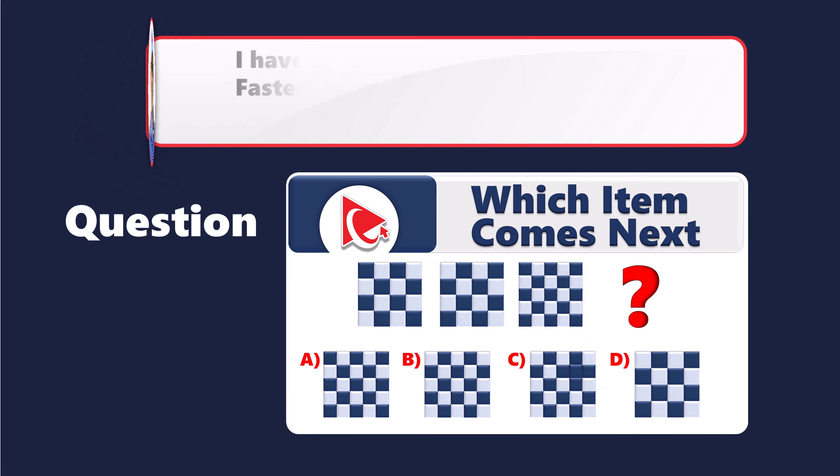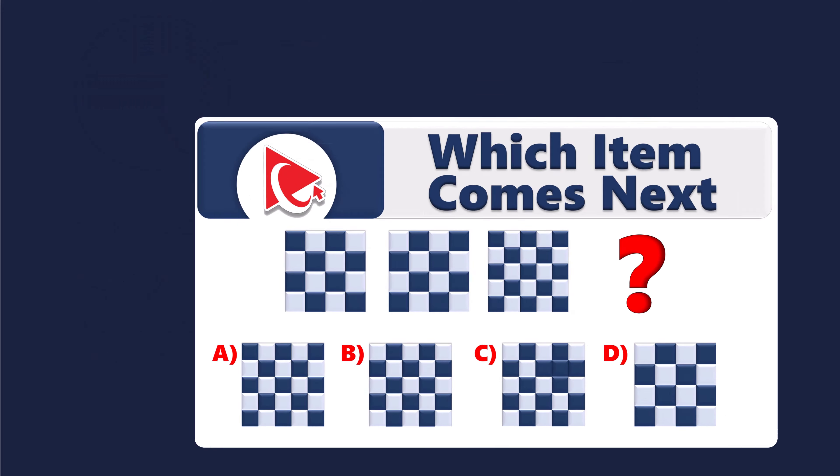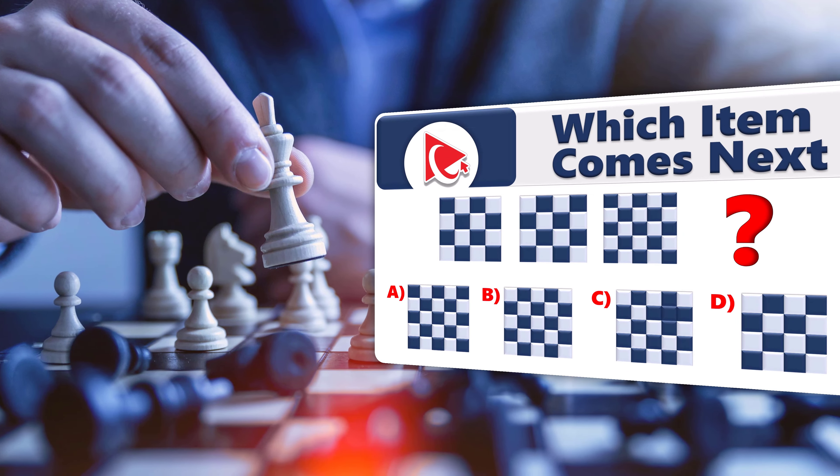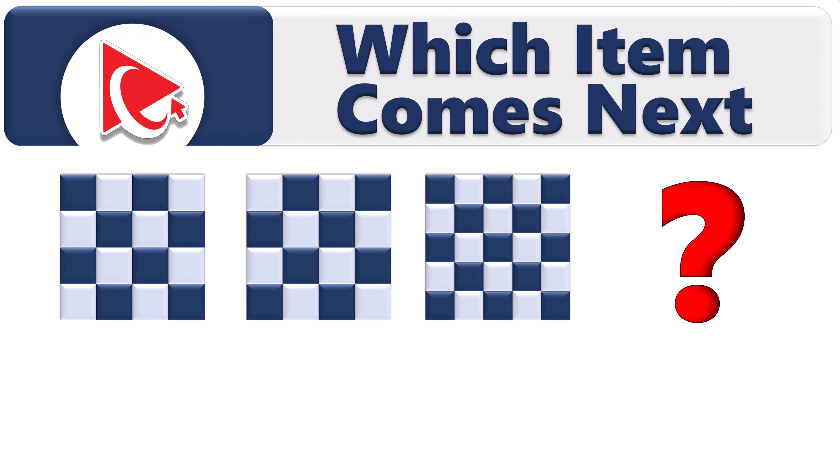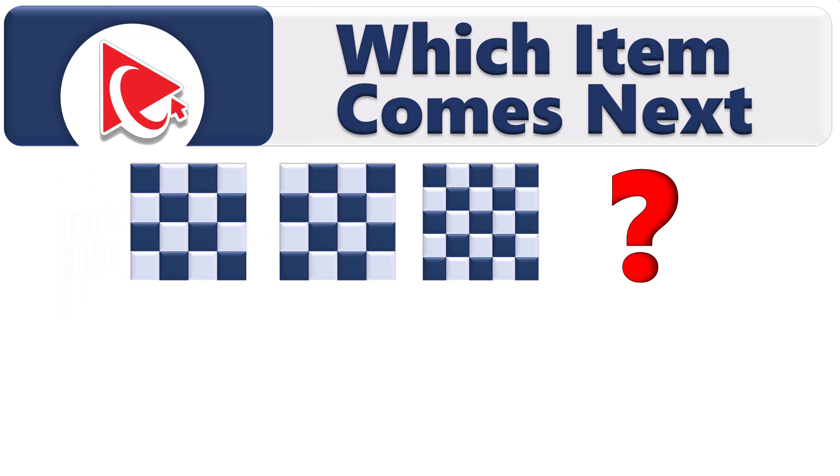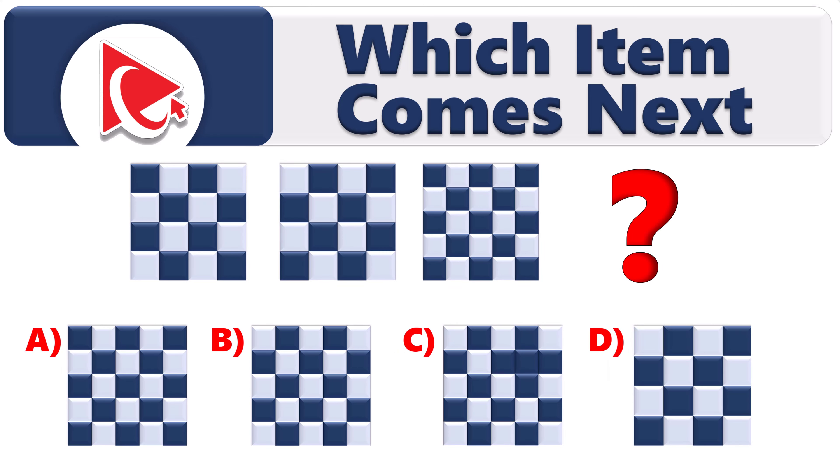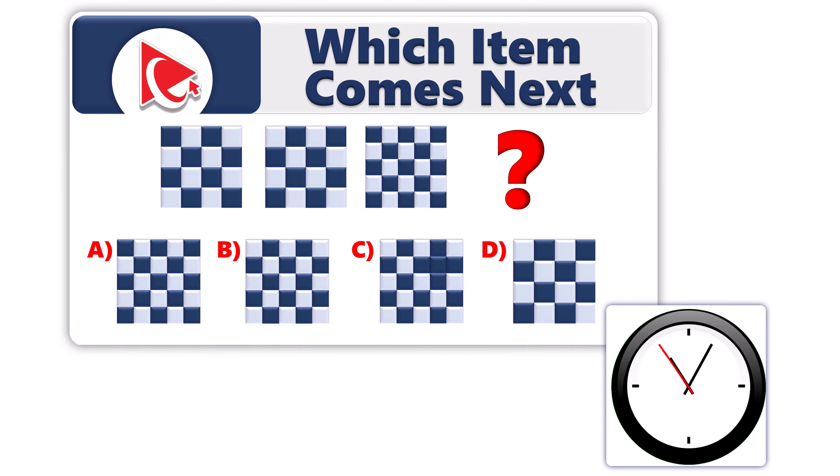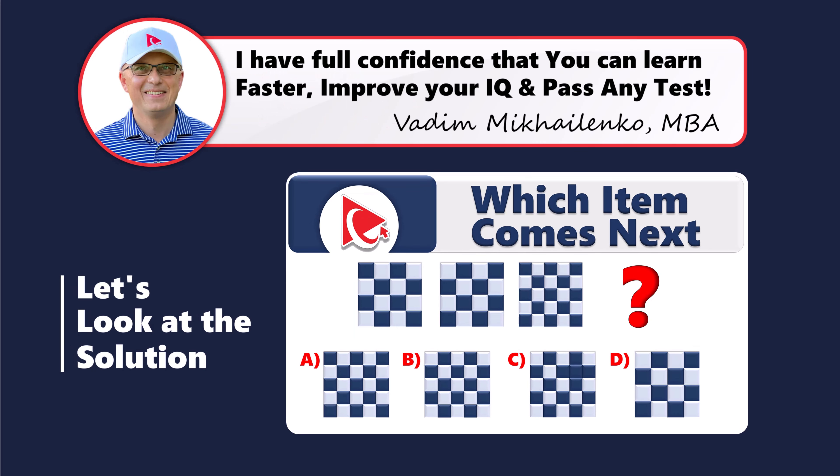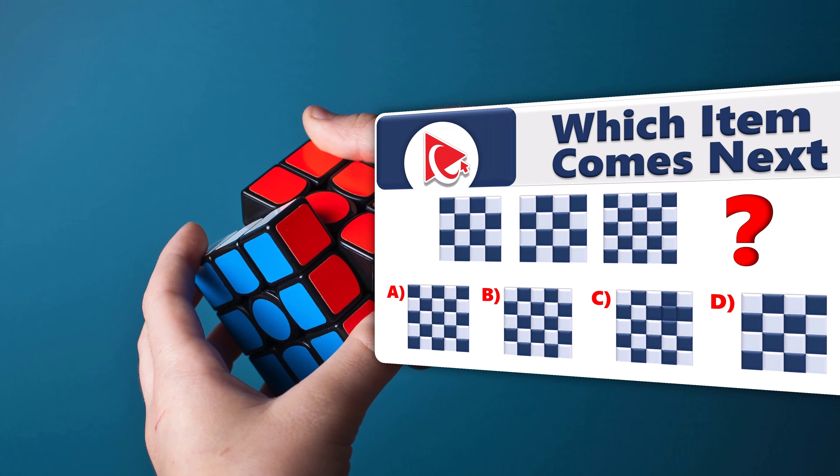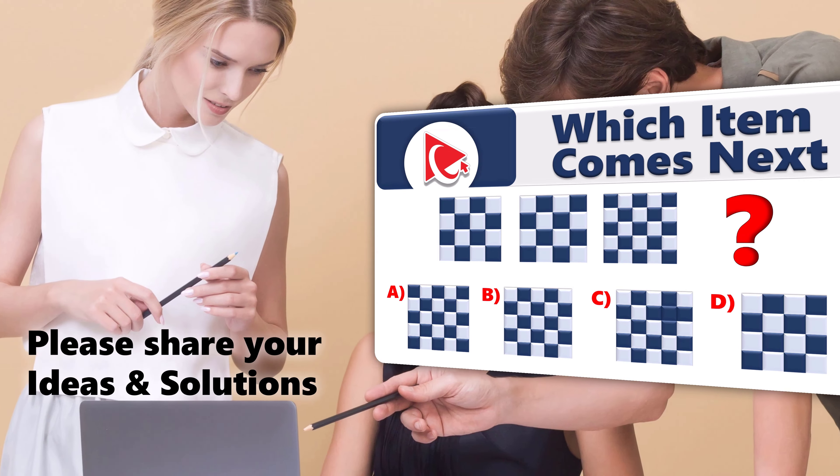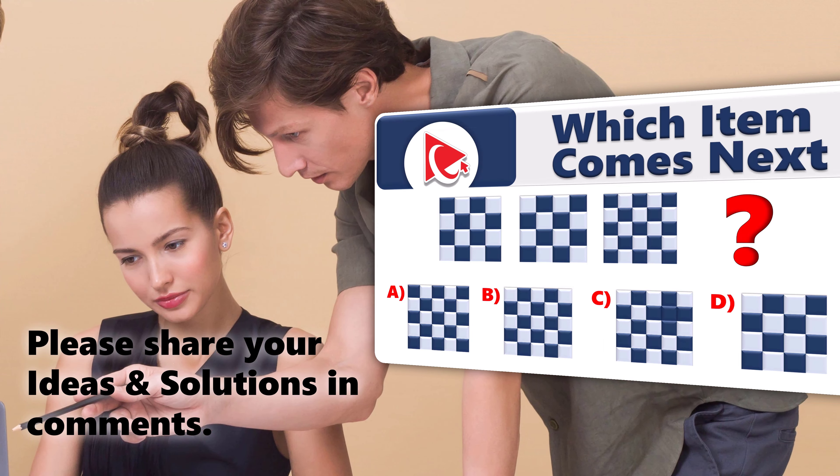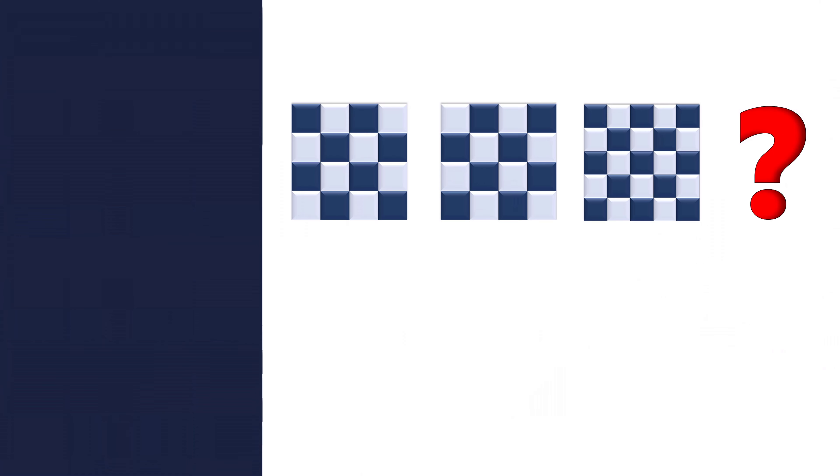Let's dive into an amazing cognitive assessment test question that not only enhances your analytical abilities, but also improves your valuable problem-solving skills. You're presented with three squares, and you need to determine which square comes next. The next square should be selected out of four possible choices: A, B, C, and D. Take a close look to see if you can come up with the solution.